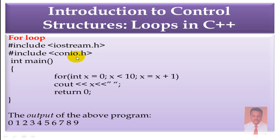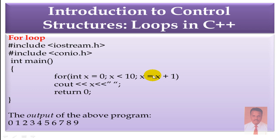Now we are going to see an example for the For Loop. We have #include iostream.h and #include conio.h. Either you can use int main or void main. Followed by the For Loop: for ( int x = 0 — this part is called Initialization — x < 10, this is the Condition — x = x + 1 or x++, this is the Increment ). Then cout << x to display the output. Using int main, we return 0.